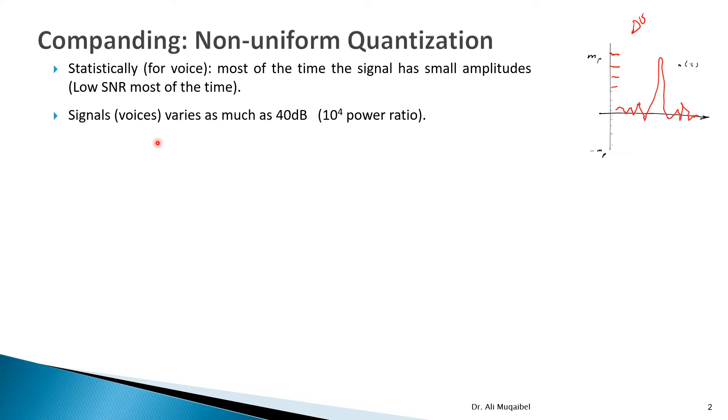If you wanted a number, the signal voice may vary as much as 40 dB. The difference between the highest level when we shout compared with the lowest level in terms of power could be 10 raised to power 4, that's 10,000 times. So what does that mean? It means that if we're going to divide things uniformly, then this is not going to be made use of. So we want, ideally, constant signal-to-noise ratio for all values.